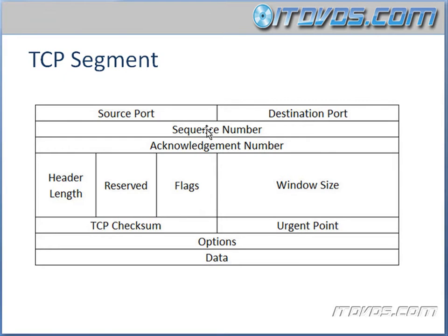The sequence number is what's used to reassemble the segments at the destination end, because with IP the packets might not arrive in the correct order. With TCP, the destination can use these sequence numbers to reassemble them in the proper order. The acknowledgment number is what the destination host wants to get next — we just saw that in our windowing example.